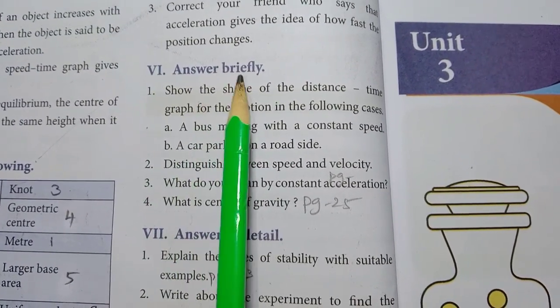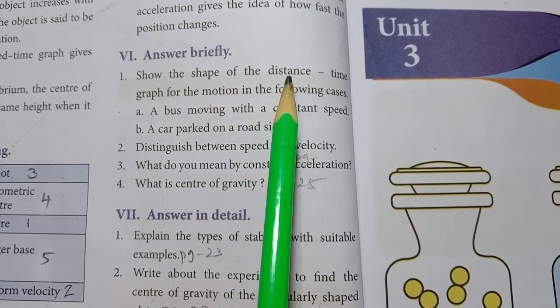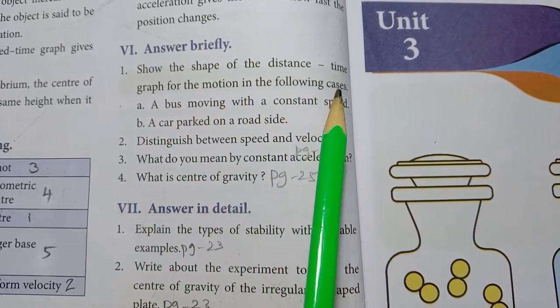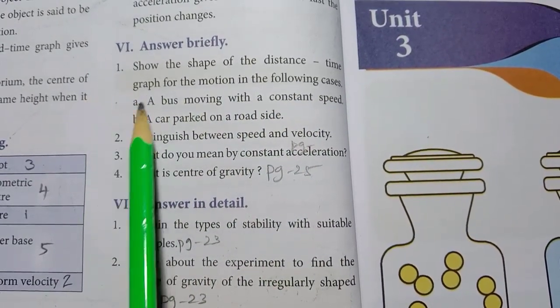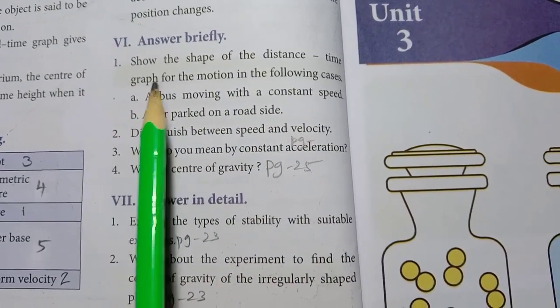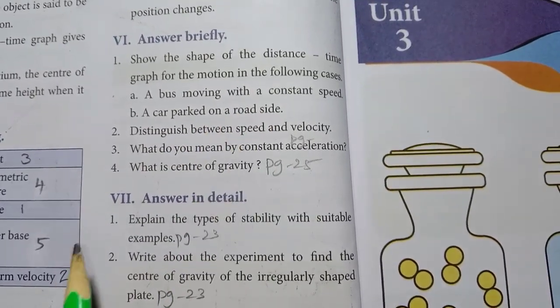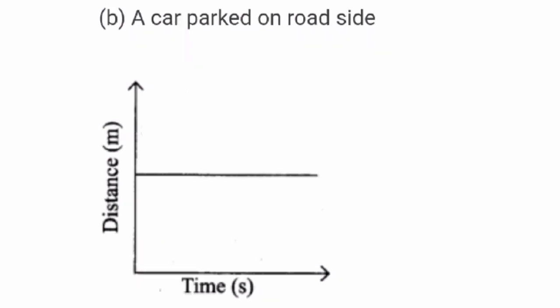Roman numeral 6: Answer briefly. 1st one — show the shape of the distance-time graph for: A) a bus moving with constant speed, and B) a car parked on a roadside. A drawing will be given — please copy it into your classwork notebook.